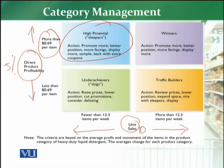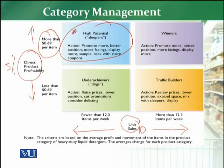For high potential categories, the retailer promotes them more because the margin is higher. The retailer improves their positioning to generate more sales from customers, gives them more shelf space, improves their merchandising, displays samples, and announces promotions, coupons, and schemes. The retailer's goal is to promote these high potential categories more and more to generate greater sales, because doing so will yield margins above average.